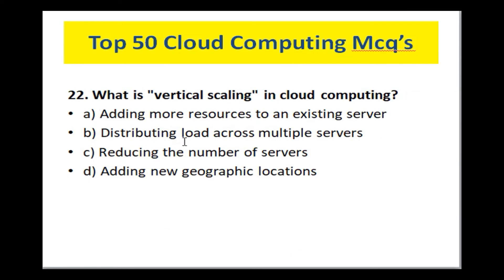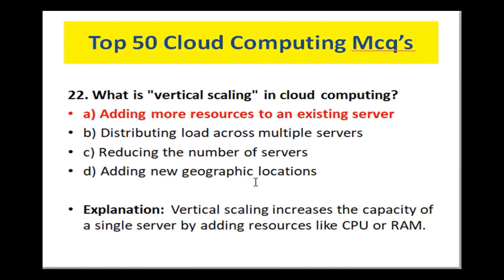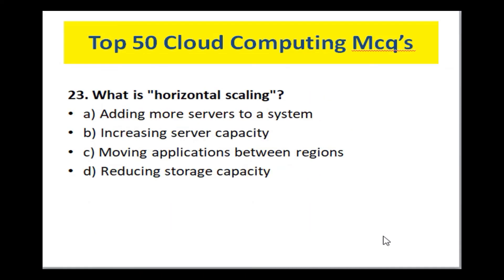What is vertical scaling in cloud computing? Options are: adding more resources to an existing server, distributing load across multiple servers, reducing the number of servers, adding new geographic locations. In vertical scaling, we add more resources (like CPU or RAM) to an existing server — we add multiple resources to the same server. That is vertical scaling.